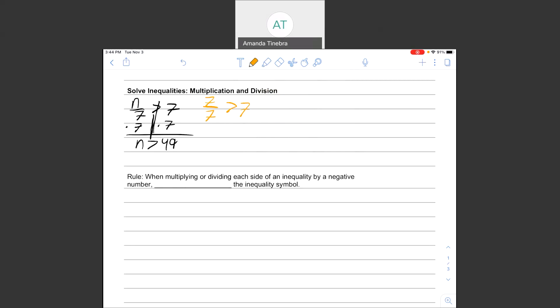70 is bigger than 49, so that would fit my inequality. 70 divided by 7 is 10. 10 is bigger than 7. Yep, that checks out. It works.